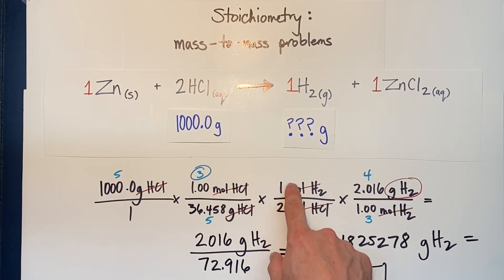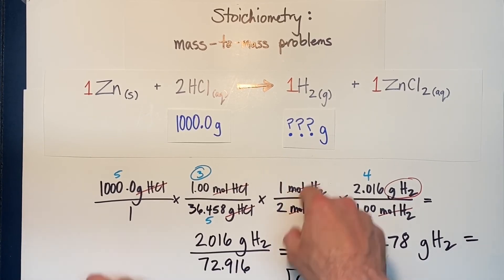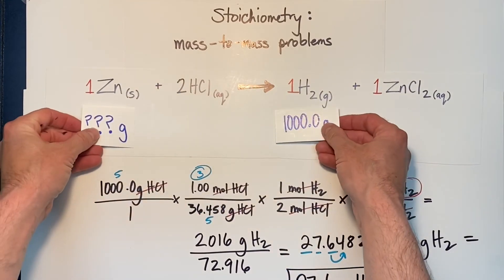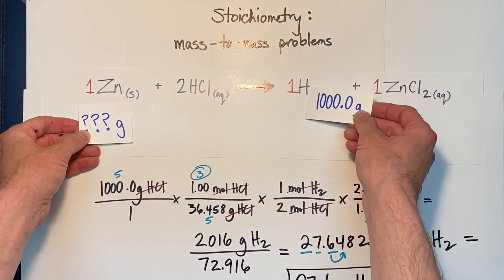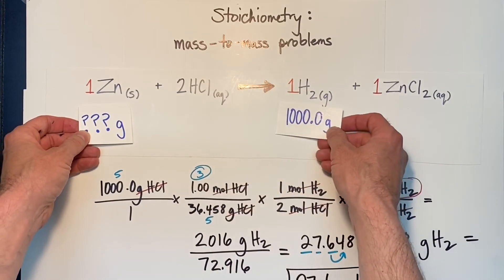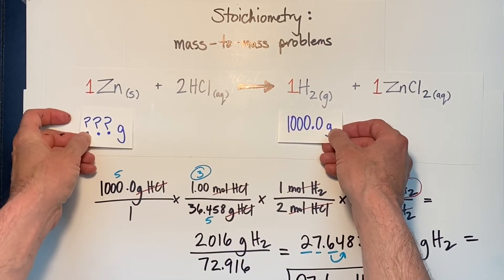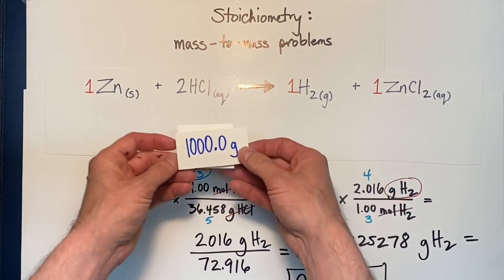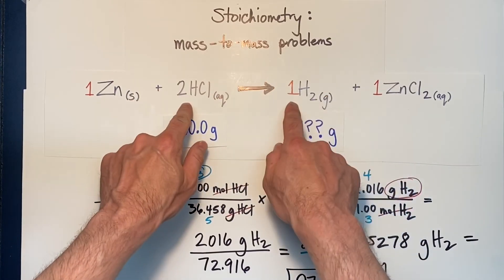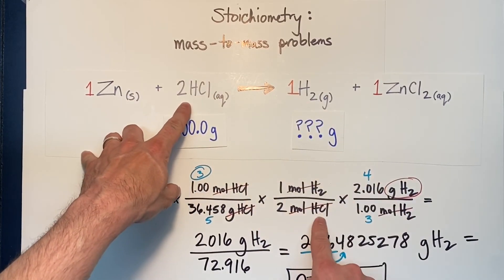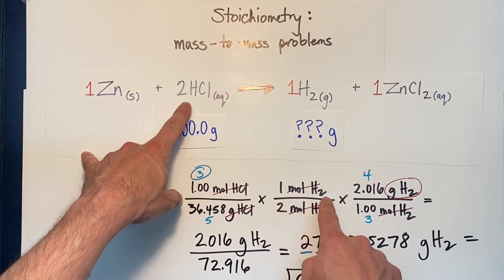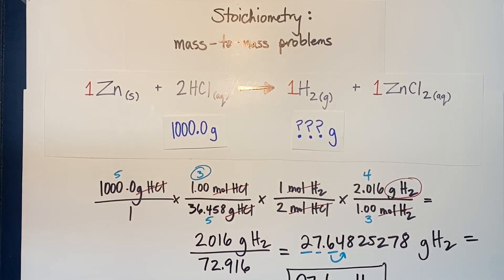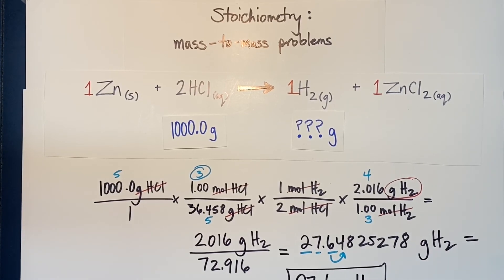I wanted to show you another example with a different mole-to-mole ratio. The first problem had a 1-to-1 ratio between hydrogen gas and zinc, while the second problem had a 2-to-1 ratio of hydrochloric acid to hydrogen gas. Thank you so much — if you have any questions about this week's lesson, please reach out to your teacher.